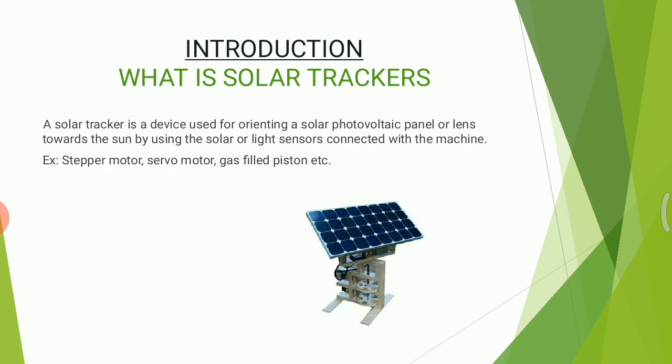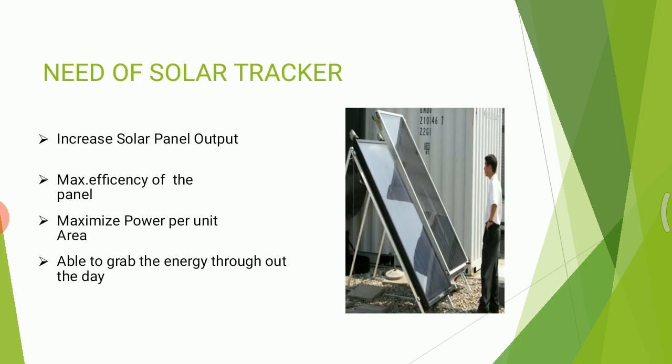A solar tracker is a device used for orienting a solar photovoltaic panel or lens towards the Sun, by using solar or light sensors connected with the machine. Solar trackers are used to face towards the Sun — they direct solar panels or modules towards the Sun, changing their orientation throughout the day to follow the Sun's path and maximize energy capture.